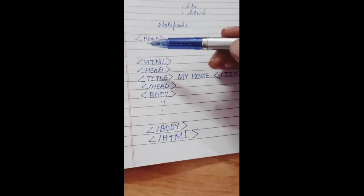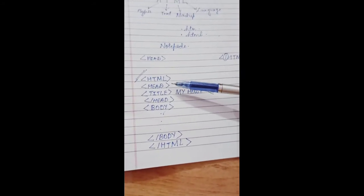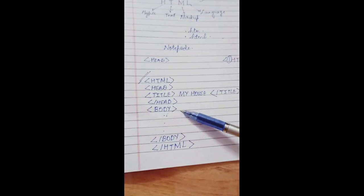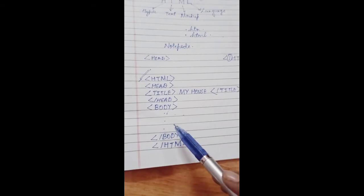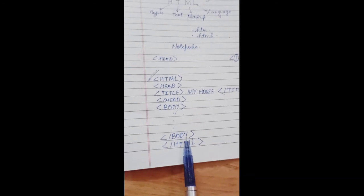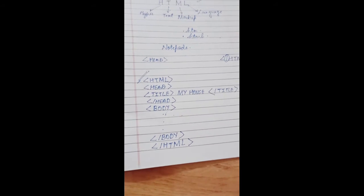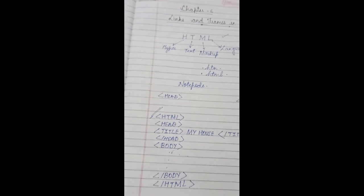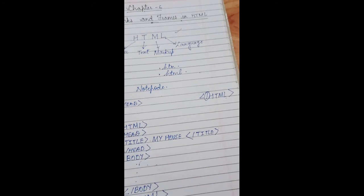This is the structure of any HTML code. We first start with HTML, then head, then we give title, then we close the head, then we open body. And here we give all the contents, all the information which you want to display on a web page. Then we close the body, then we close the HTML. You all have studied this, I am just recalling all those things.